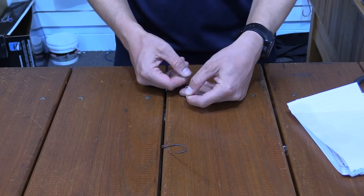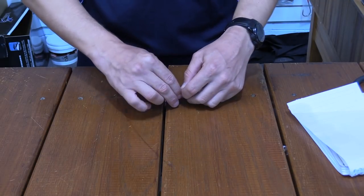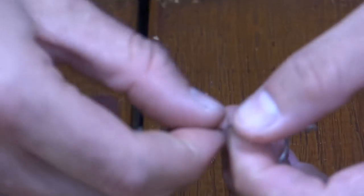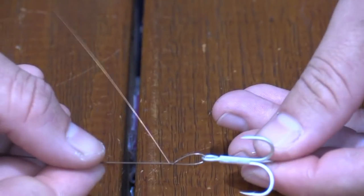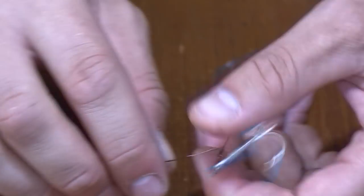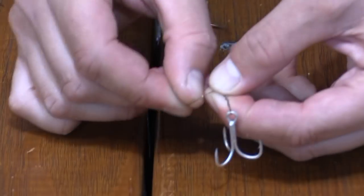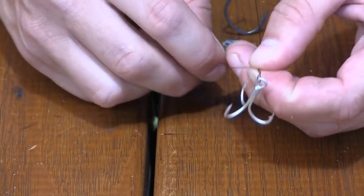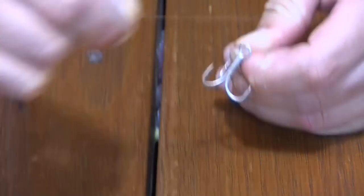Hold your treble where you want it and create that first twist, lock it off and then you can start your haywire twist. Once completed the haywire twist, kink your tag line. Pinch your haywire twist and perform your crank arm again.